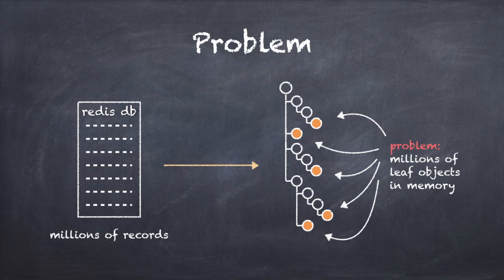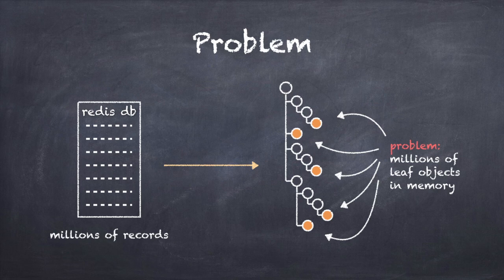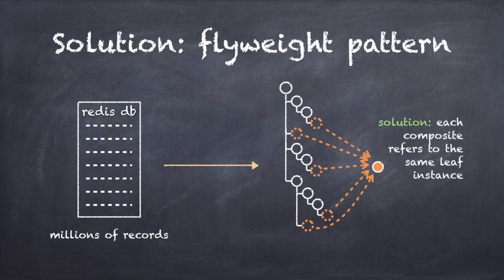Here's the problem. If I create one unique object instance for each name, then I will end up with millions of leaf object instances in memory. This is redundant because the names are already available in the Redis database. The flyweight pattern is the solution to this problem. It performs a remarkable trick: it creates one single leaf instance and shares it millions of times in the tree, so every composite ends up referencing the same leaf object.